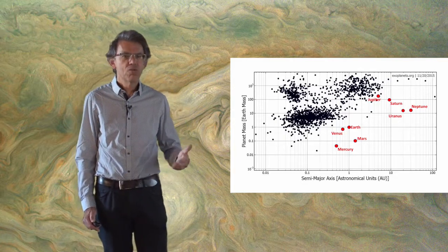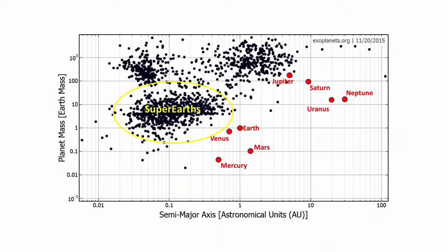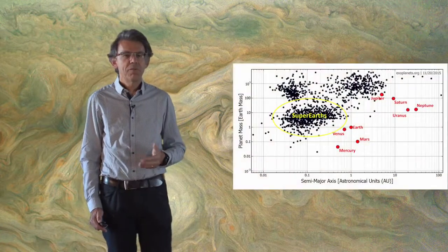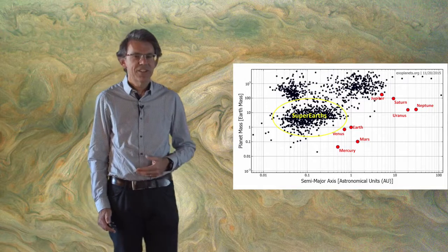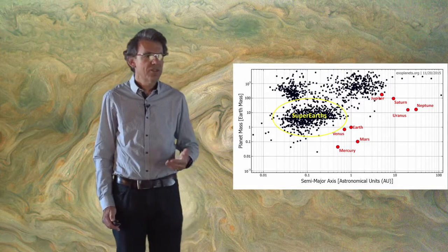This is the group of super-Earths. These are planets with a mass intermediate between the mass of Earth and Neptune, but with an orbit typically smaller than Mercury or Venus. Super-Earths are pretty common—about 50 percent of stars have some super-Earths—but they are totally absent in our solar system, and we'd like to understand why.